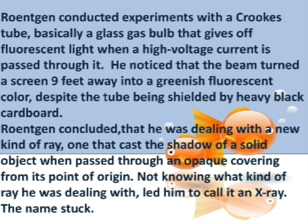Röntgen was conducting an experiment with the Crookes tube, a glass tube that gives a fluorescent light when a high voltage current is passed through it. He noticed that the beam turned a screen nine feet away into a greenish fluorescent color, despite the tube being shielded by heavy black cardboard. Röntgen concluded he was dealing with a new kind of ray that could cast the shadow of a solid object through an opaque covering. Not knowing what kind of ray it was, he called it X-rays, and the name stuck.